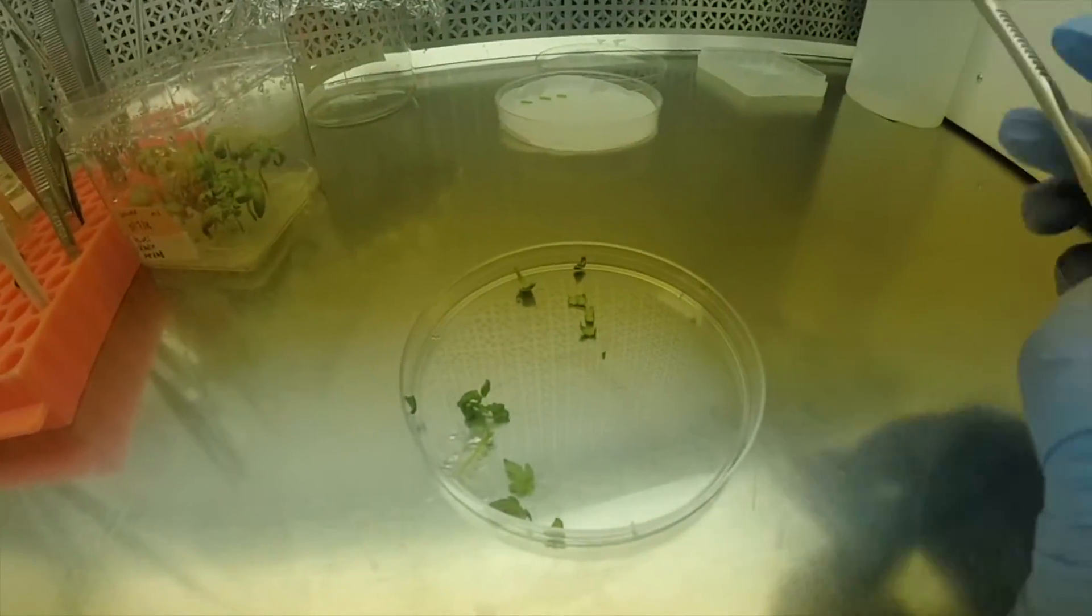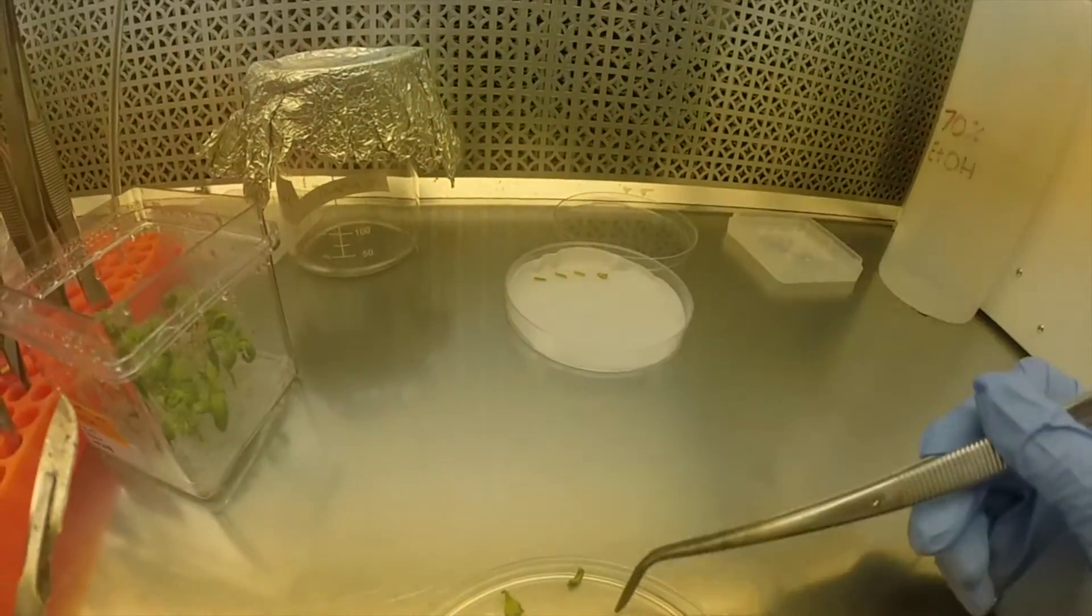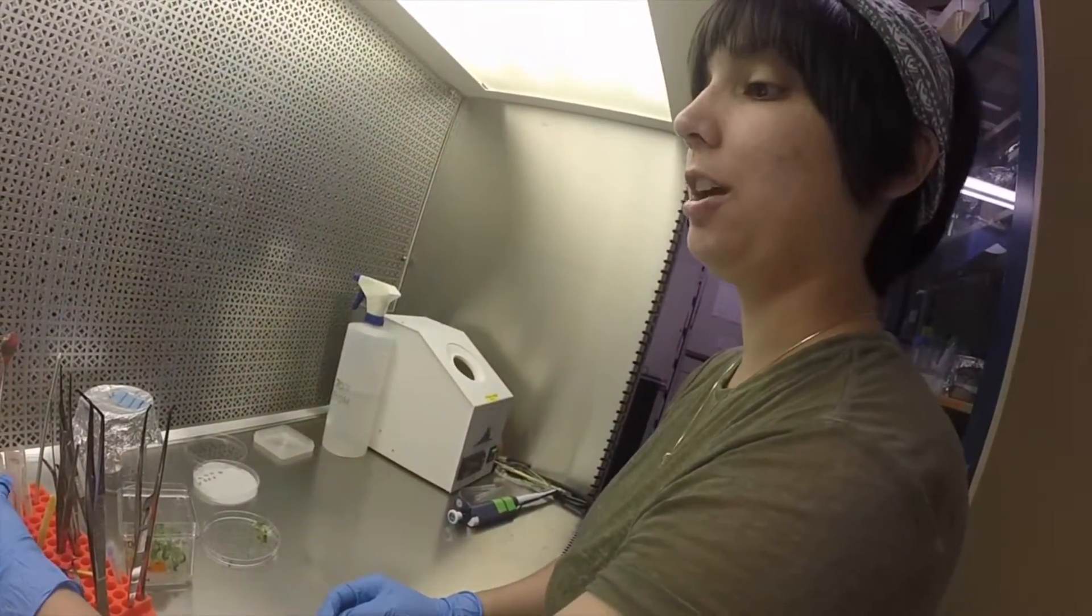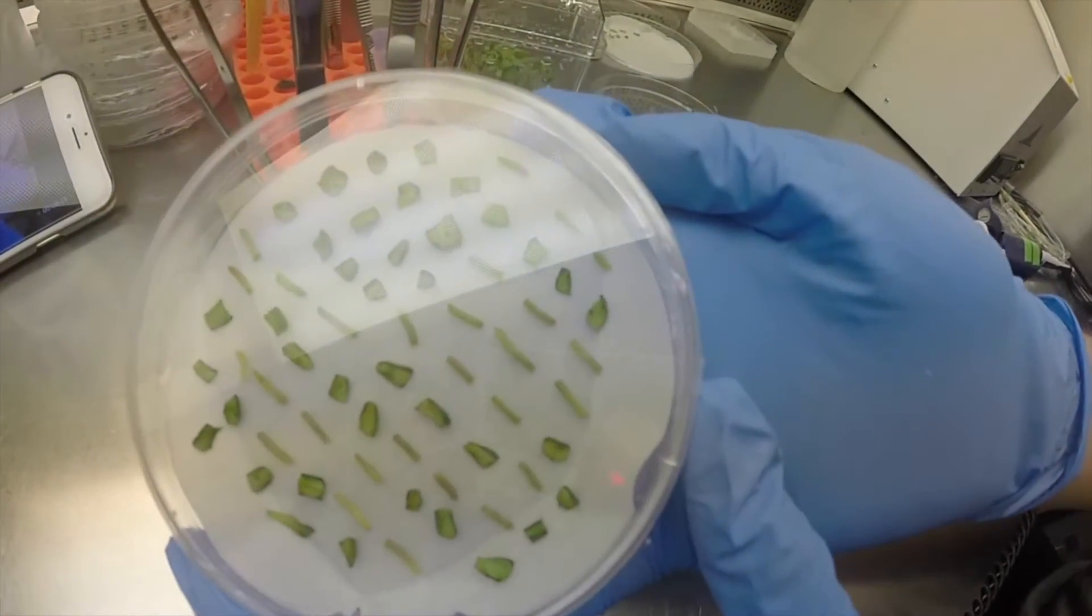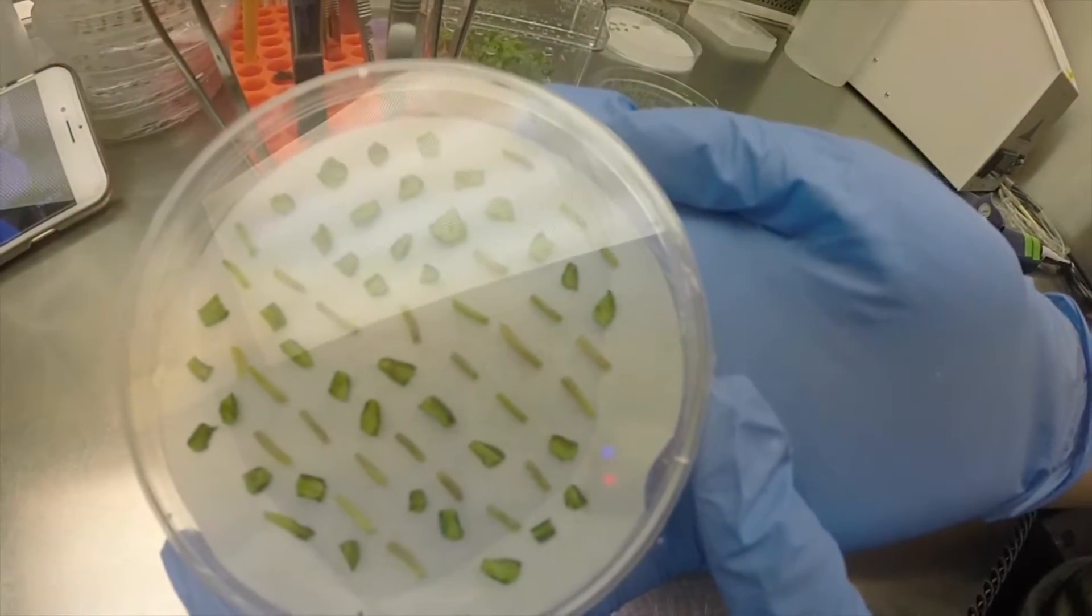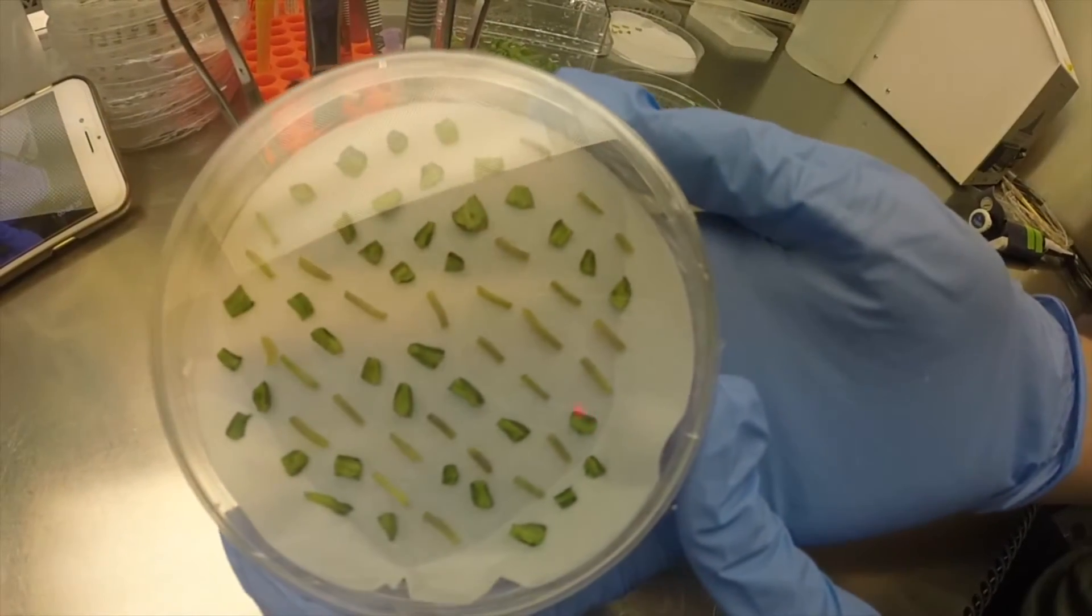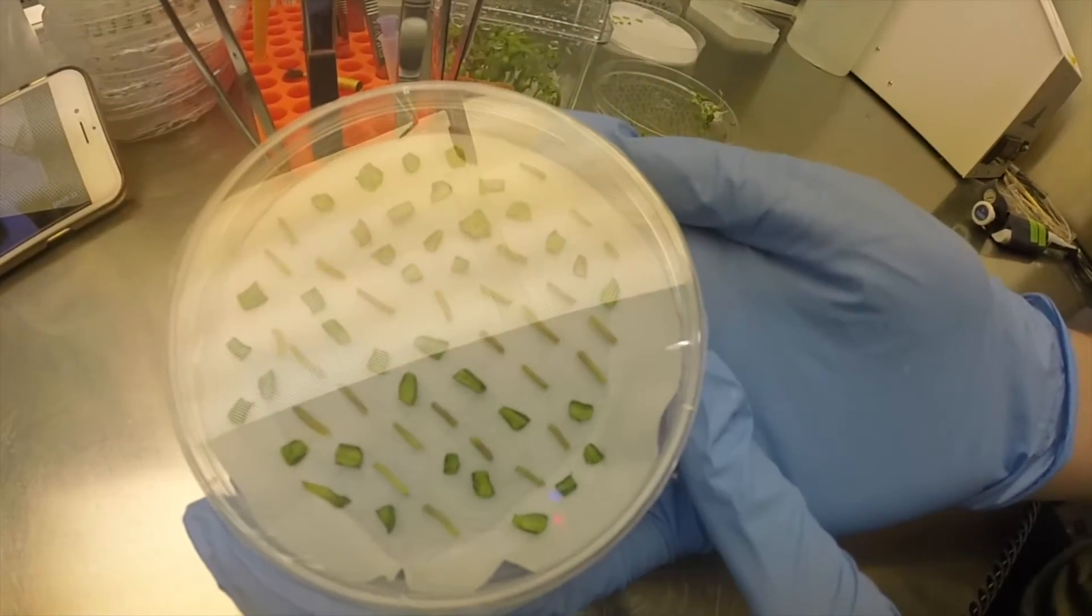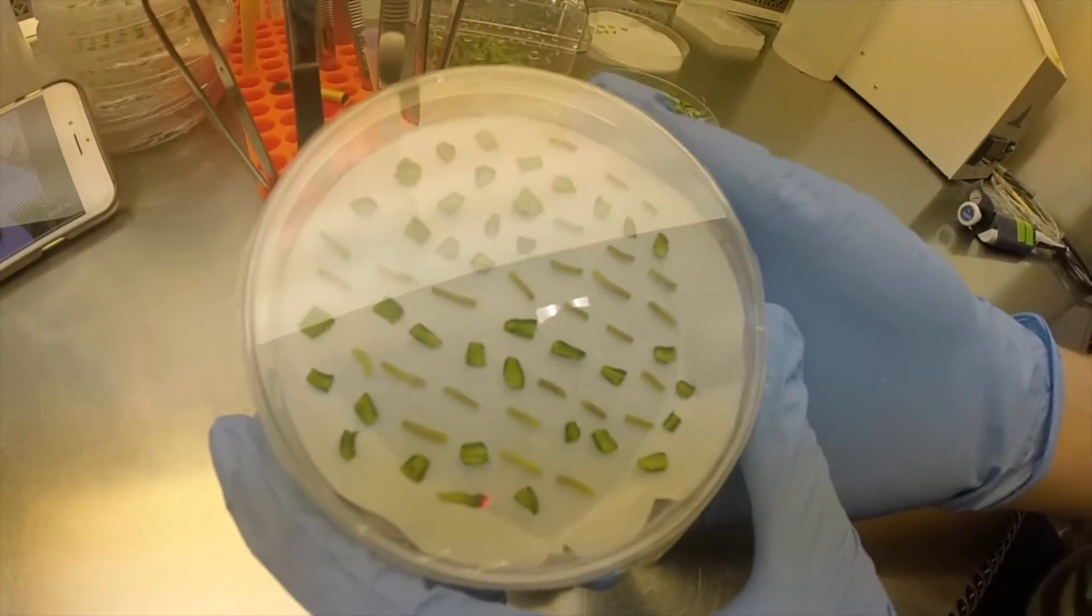Again we're going to immediately transfer these to our media. Once you're done, the plates should look something similar to this where we have a full plate but not overcrowded with a combination of meristems and cotyledons. You can separate these two if you would like or leave them all combined. That is a preference.